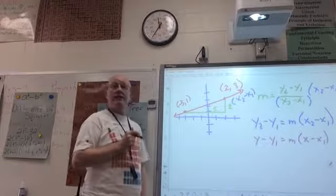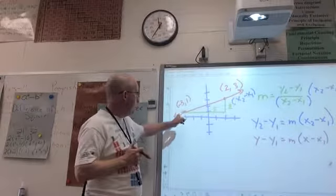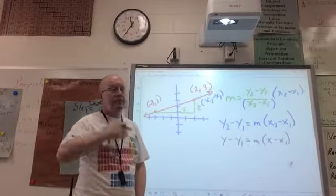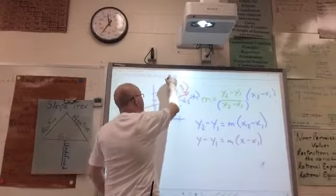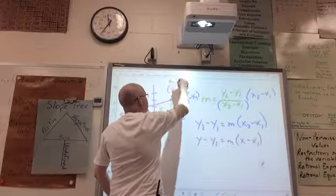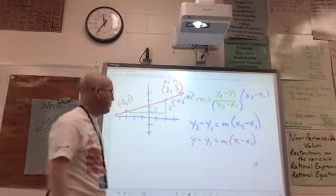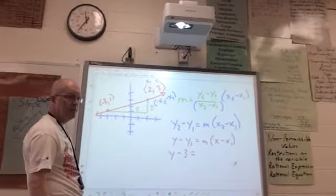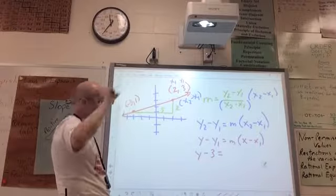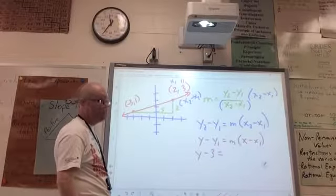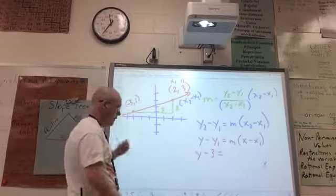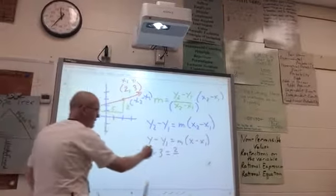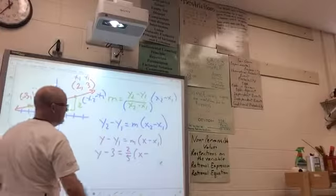Corinne, choose a point. Minus three and one or two and three? Two and three. Thank you. Corinne just chose a point. So this is x1 and this is y1. We plug it into our equation. Y minus three equals, what's our slope? Two over five. Rise of two, run of five. So it's two fifths. X minus two.